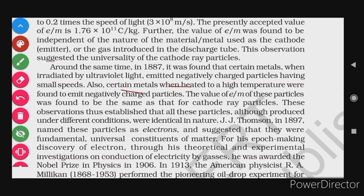Also, certain metals when heated to a high temperature were found to emit negatively charged particles. So when certain metals are heated to a very high temperature, they also emit electrons. The value of e/m of these particles was found to be the same as that of the cathode ray particles. So all three types of particles — from cathode rays, UV irradiation, and heating — had the same charge-to-mass ratio, confirming they are all identical.